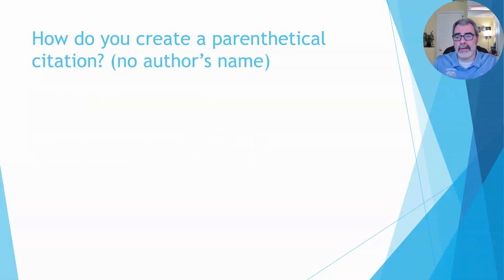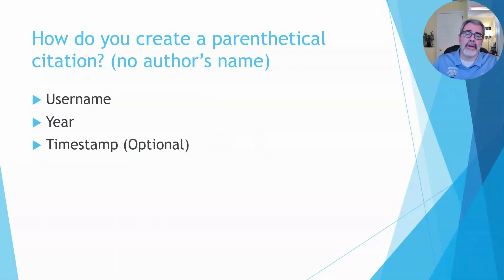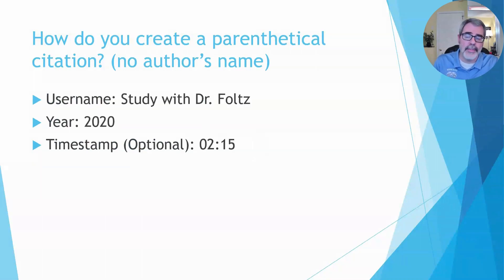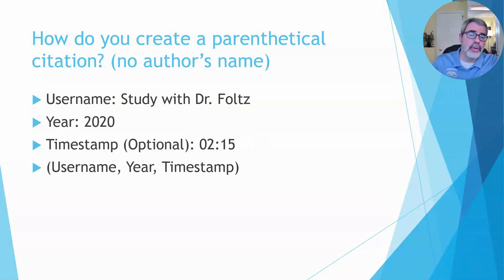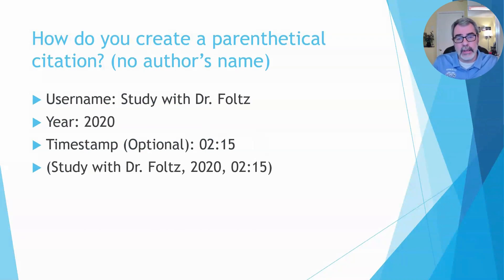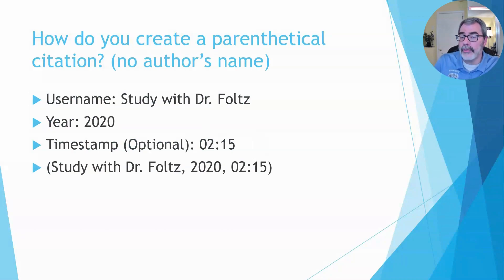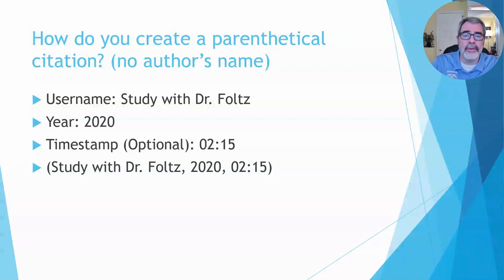What do you do if you don't have the author's name? You're going to gather information, but instead of an author's name you're going to use the username. In our hypothetical example the username is Study with Dr. Fultz, as opposed to simply Fultz. The structure is the same except the username replaces the name in the first portion of the entry. Notice how much space that username takes up — you're going to be tempted to put it in quotation marks or italics, but don't. Keep it in standard formatting without any special effects.